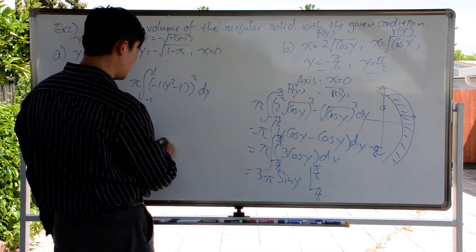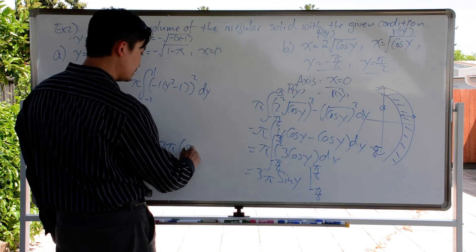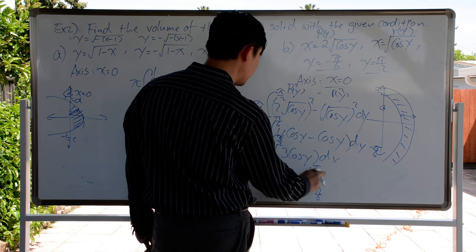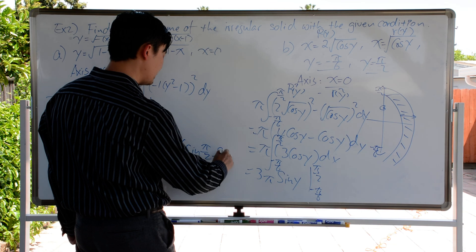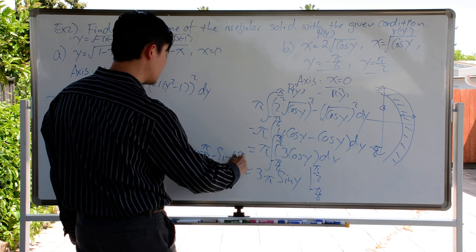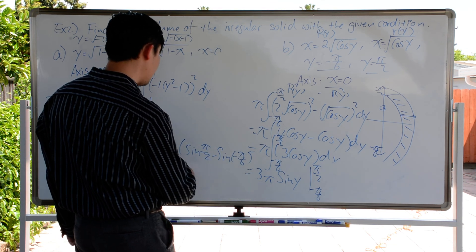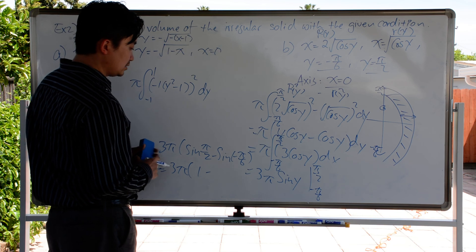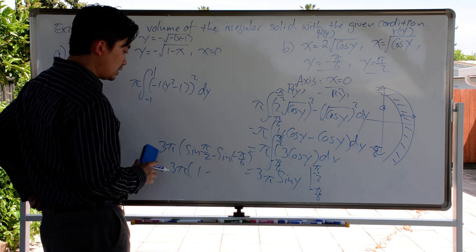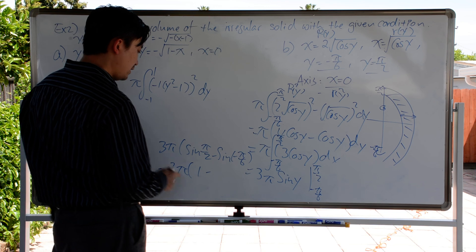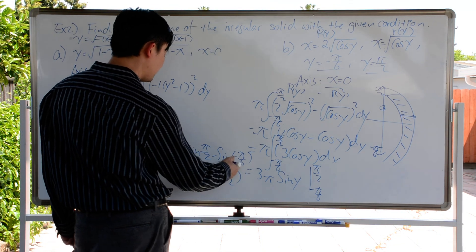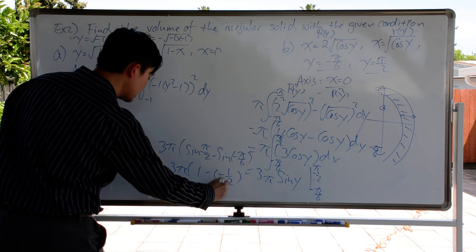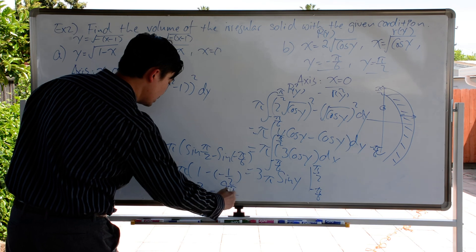Using the Fundamental Theorem of Calculus Part 2: 3π times sine of pi over 2, minus sine of negative pi over 6. Sine of pi over 2 equals 1. Sine of negative pi over 6, which is negative 30 degrees, is negative 1/2 — because that's in quadrant 4. So we get 3π times 3/2, which equals 9π over 2, and that's the final volume.